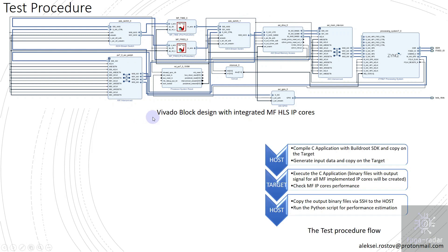The test procedure flow is as follows: on the host, I compile the C application and copy it to the target. I also generate input data and copy that file as well. On the target, I execute the C application. After it finishes, binary output files produced by each IP core are created. I can also check timing — how long it takes to calculate the entire sequence in both IP cores.